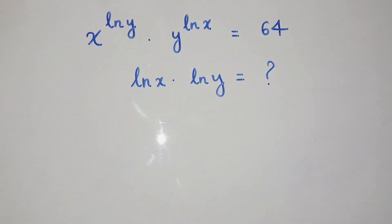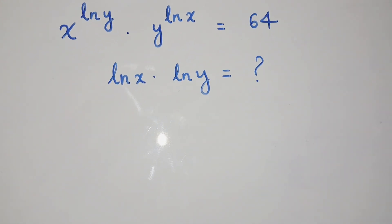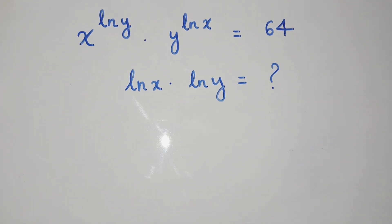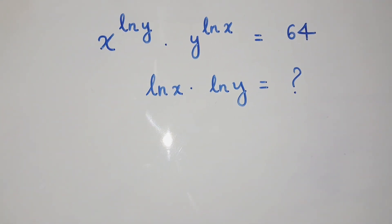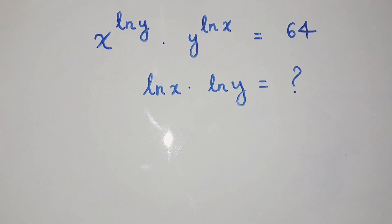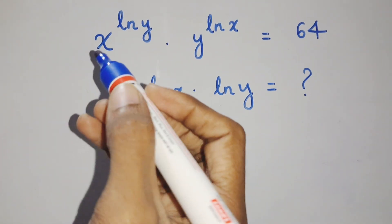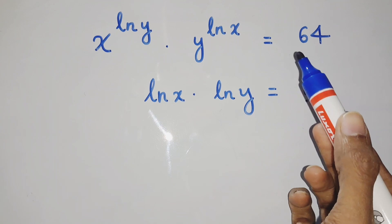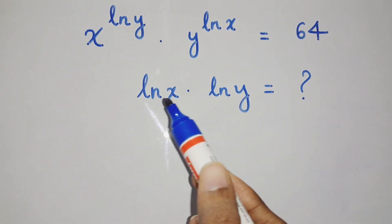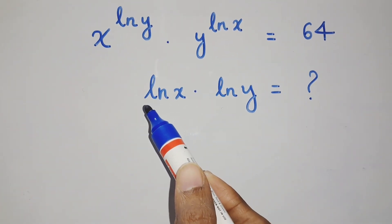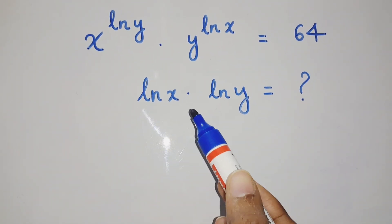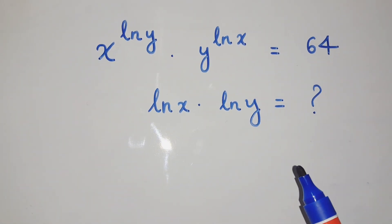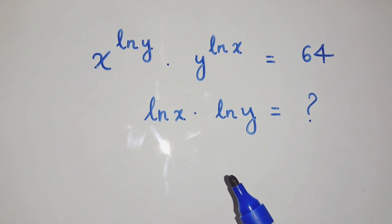Hello everyone, today we are going to solve one logarithmic exponential equation given by x to the power ln y, multiplied by y to the power ln x, equals 64. From this we have to find out the value of ln x times ln y. There are many approaches for this problem.